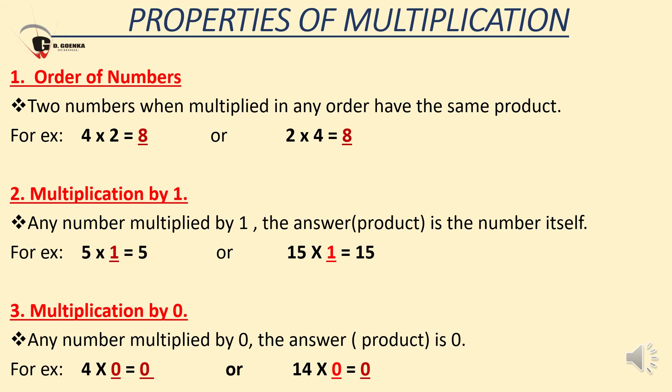Second property is multiplication by 1. Any number multiplied by 1 gives a product that is the number itself. For example, 5 multiplied by 1 equals 5, and 15 multiplied by 1 equals 15. You can multiply any number with 1 and the answer remains the number itself. Third property is multiplication by 0. Any number multiplied by 0 gives a product that is always 0. For example, 4 multiplied by 0 equals 0, and 14 multiplied by 0 is also equal to 0.